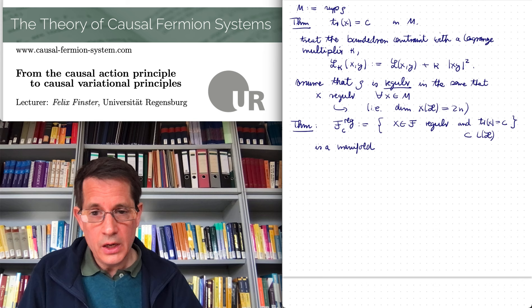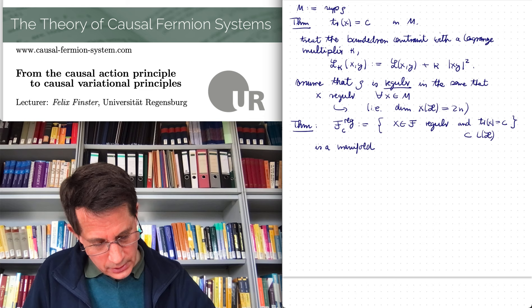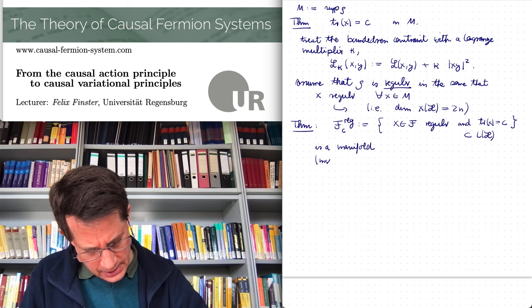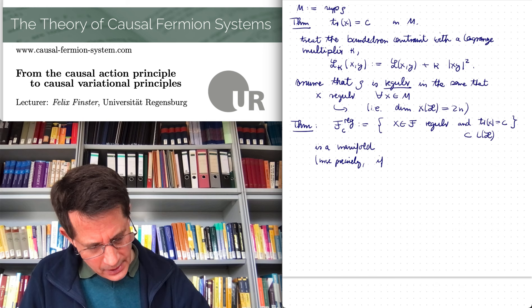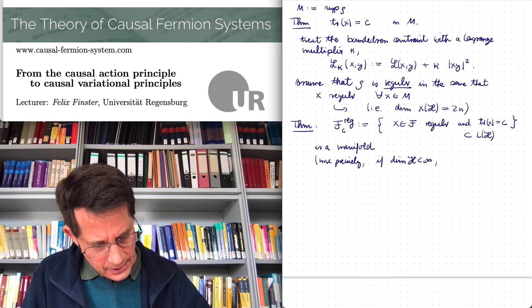If the Hilbert space is finite dimensional, then it's a finite dimensional manifold. That should be more precise. If the dimension of H is finite, in the finite dimensional setting, this manifold is finite dimensional.